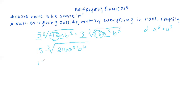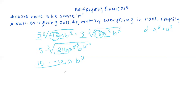The cube root of negative 216 works out evenly — it's negative 6. The cube root of a cubed is just a. The cube root of b to the sixth — dividing the exponent by the root number — gives b squared. Then multiply the 15 outside by negative 6, and your final answer is negative 90ab squared.